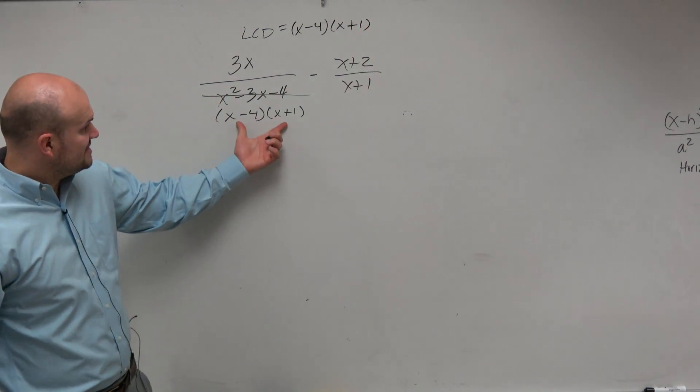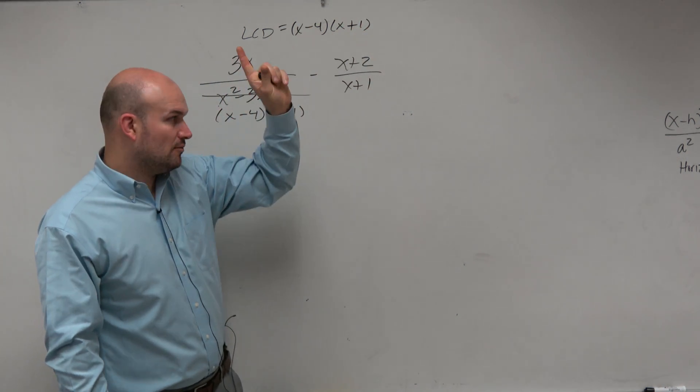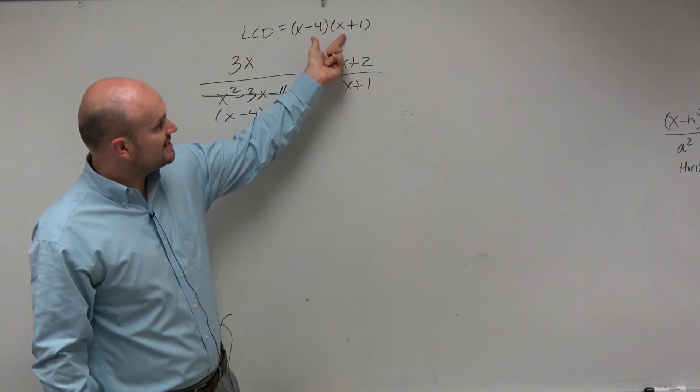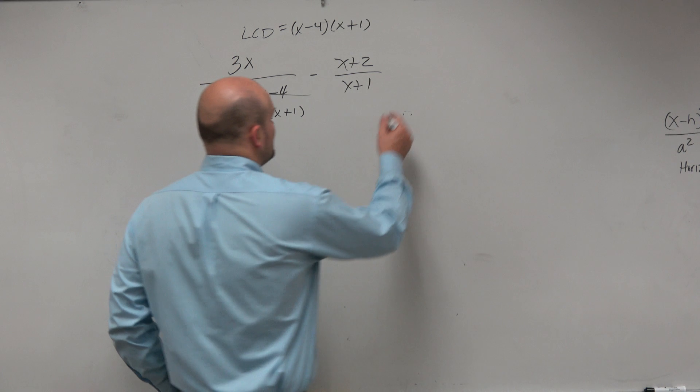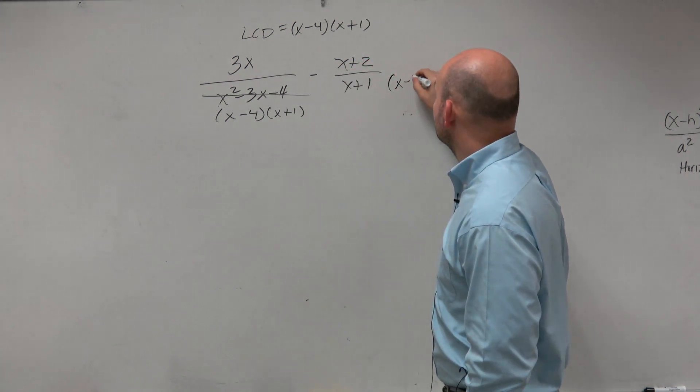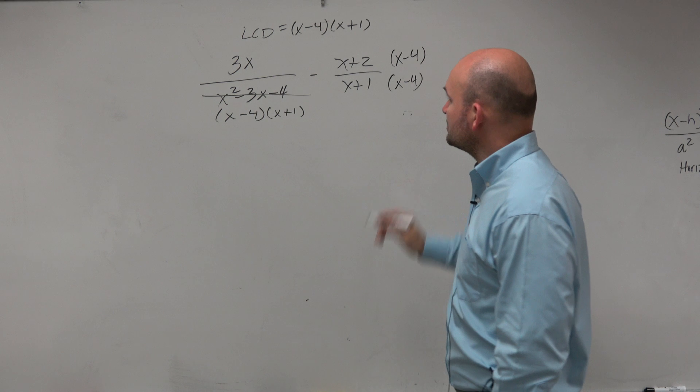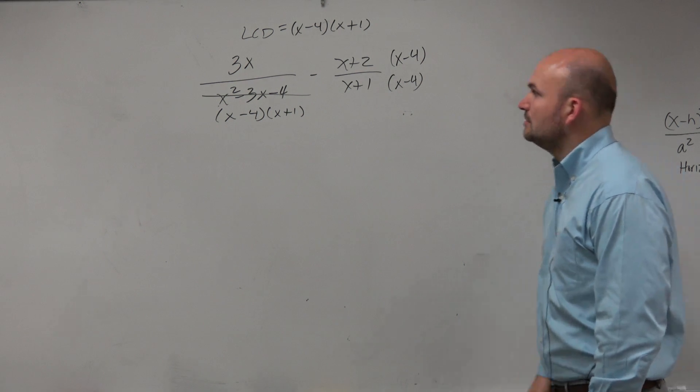Because this denominator evenly divides into that one time. x plus 1 divides into this x minus 4 times. So that's my common denominator. So the only thing I need to do in this problem to get common denominator is just multiply by an x minus 4 over an x minus 4.